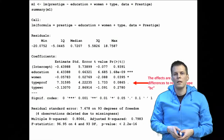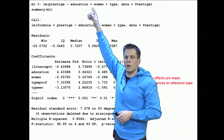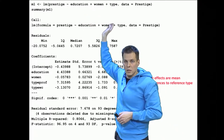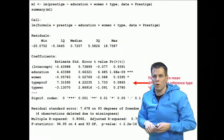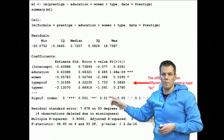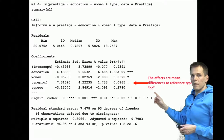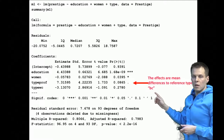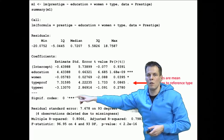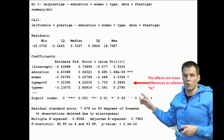Let's take an example of a regression of prestige on education, women, and type of occupation using the prestige data we have been using before. We get some regression estimates and we will be focusing on these dummy variables. The effects of professional and white collar tell us the expected difference between professional occupations and blue collar occupations, and between white collar and blue collar occupations. So the regression coefficients here are differences relative to a reference category, which is blue collar.